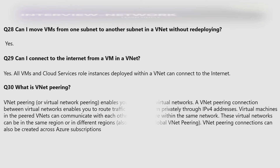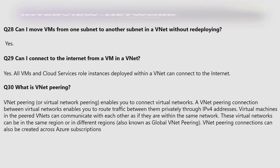What is VNet peering? VNet peering or virtual network peering enables you to connect virtual networks. A VNet peering connection enables you to route traffic between them privately through IPv4 addresses. Virtual machines in peered VNets can communicate with each other as if they are within the same network. These virtual networks can be in the same region or different regions, also known as global VNet peering. VNet peering connections can also be created across Azure subscriptions.